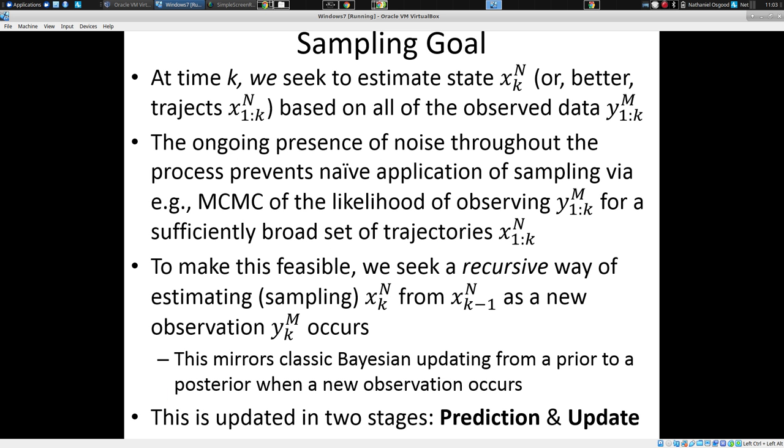And we're seeking to estimate state at a given time, X sub k. And it bears understanding that if the system is evolving slowly compared to the sampling, successive samples will tell you a lot about today's state. Like imagine we're dealing with a disease like TB. TB is a disease that tends to spread slowly. Many people get infected. About a third of the world, I heard the estimate recently, is infected with TB.